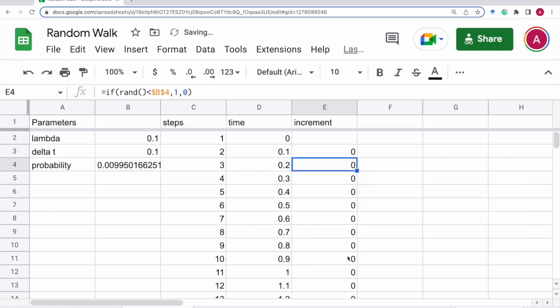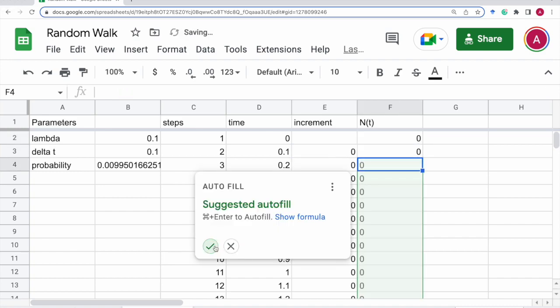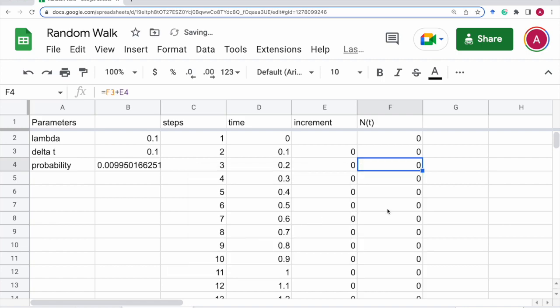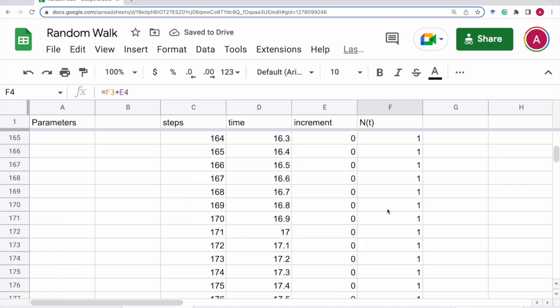So we copy this. And finally, the random variable we need is given by the previous step plus the increment. And we can autofill. So this will simulate a Poisson process.